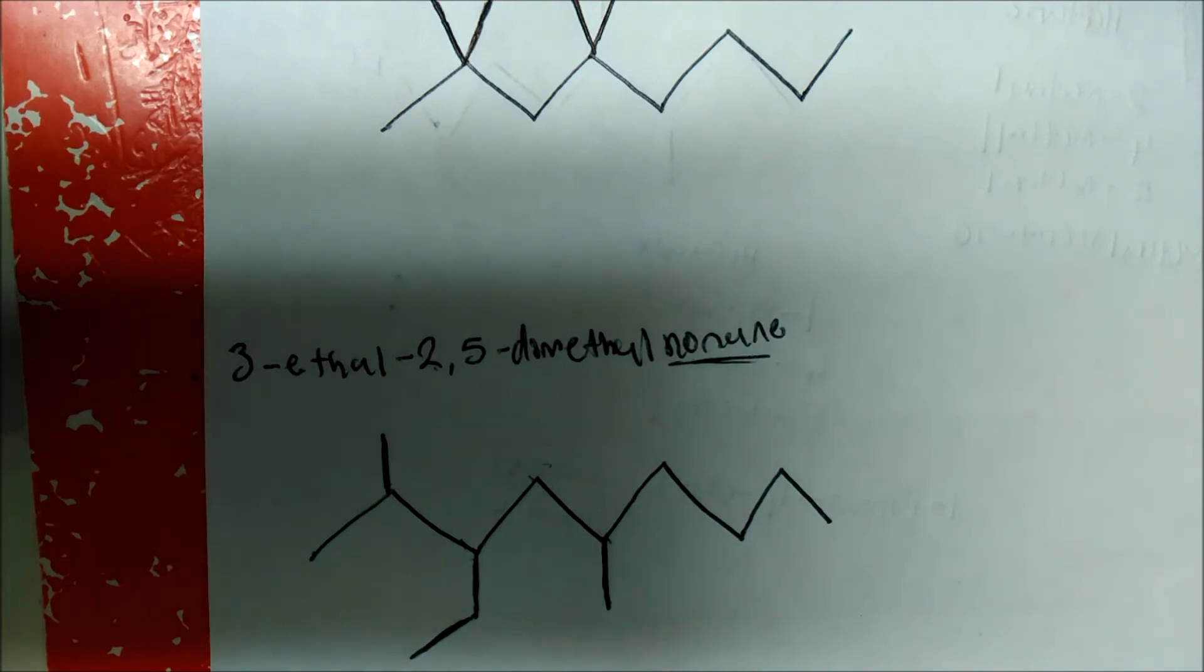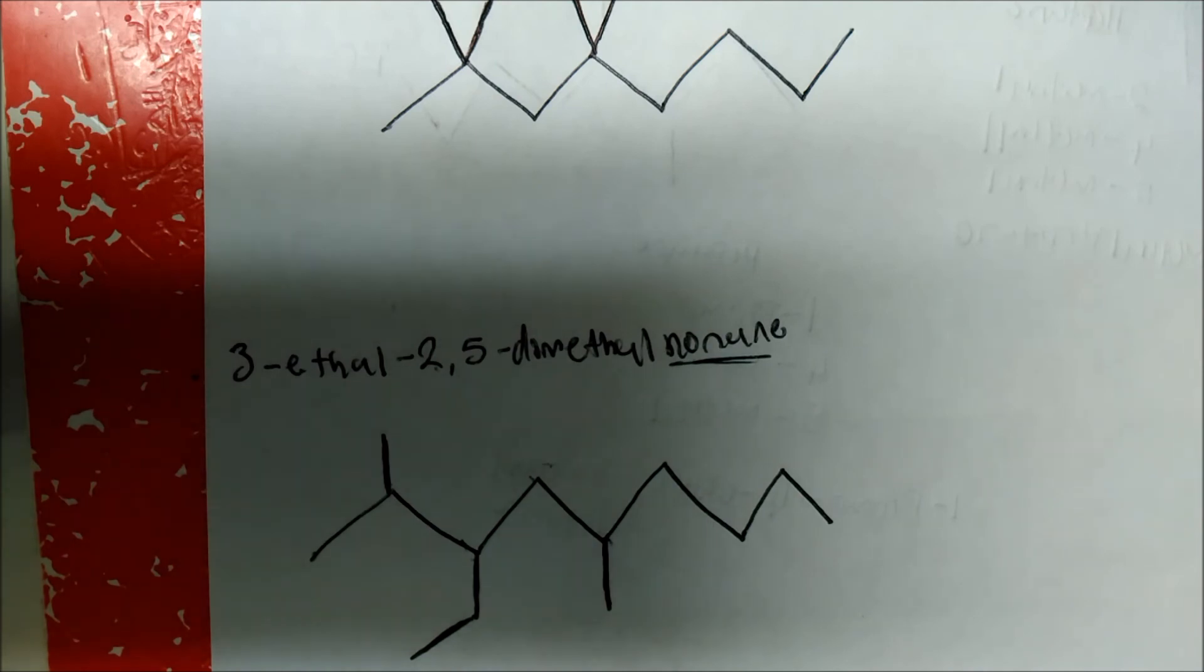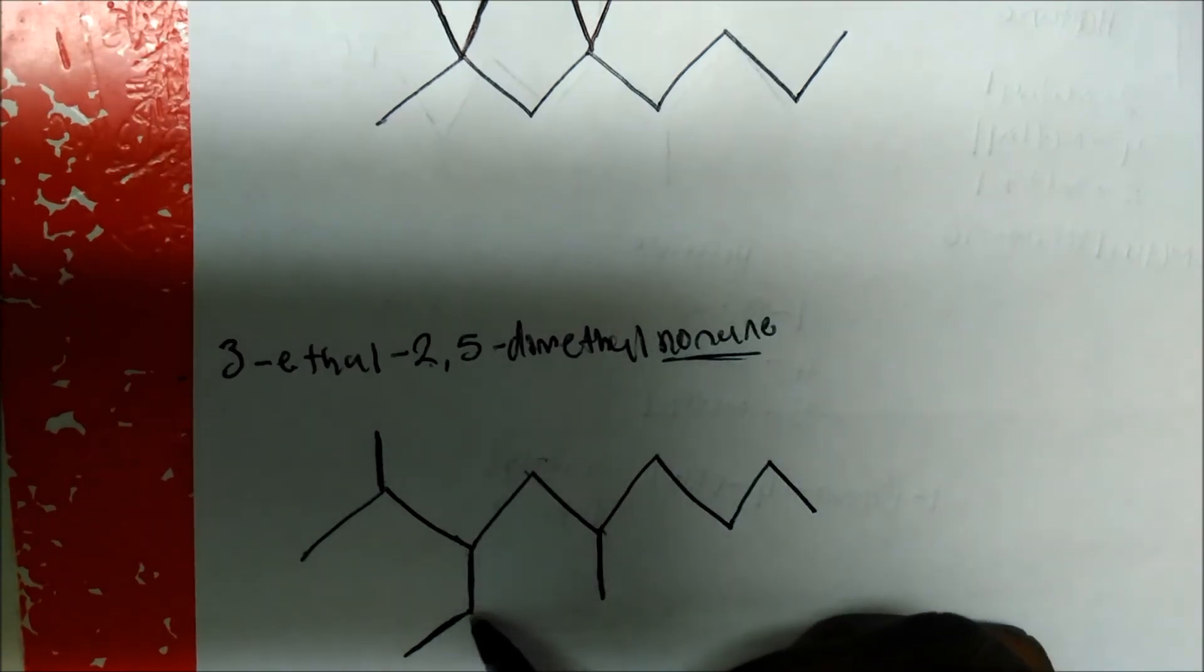So again, identify your parent. The numbers will tell you what carbon those specific substituents are on. And the substituent goes by methane, ethane, propane, butane. The only thing you do as substituents, they now take on the form of YL.